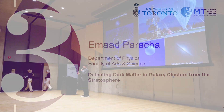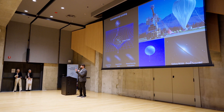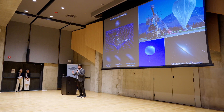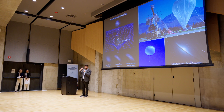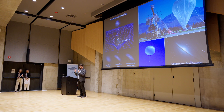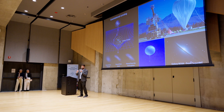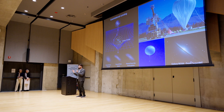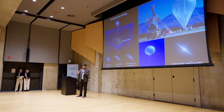What is the universe made of? You might say stars and galaxies — things we can see — but they only account for 15% of the mass of the universe. The other 85% is actually in something we can't see. It's invisible, and it's called dark matter.